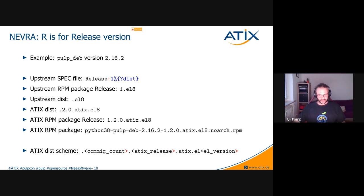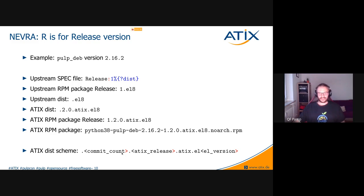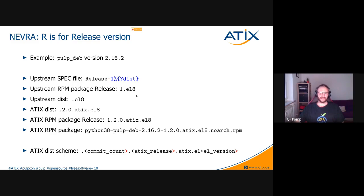Behind the commit count is a zero, which is our Attics release. If we don't change anything in the source repository, the build pipeline will refuse to repackage. When we do want to force a rebuild despite no source changes, we bump the Attics release from zero to one to get a new version. Behind that release we add '.atix' to easily identify packages we built ourselves, followed by .el8, the same as upstream.